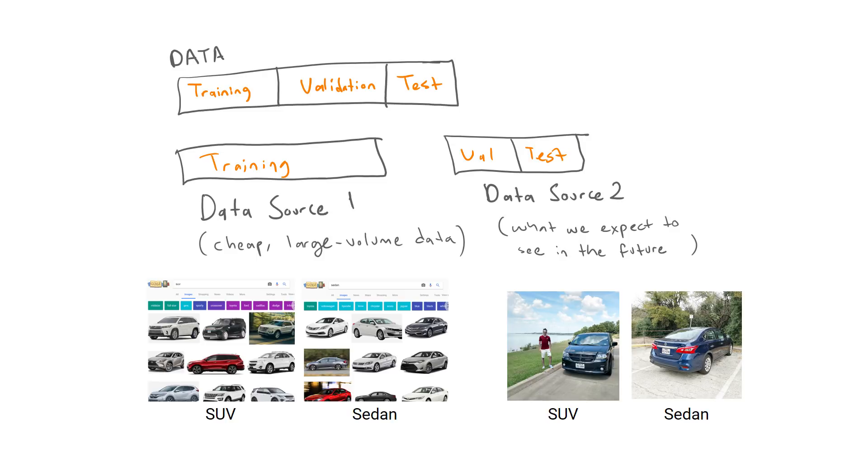One thing to keep in mind is to choose validation and test sets to reflect the type of data you expect your model to receive in the future. Now we know what training and validation sets are and how they are used to recognize overfitting and underfitting.